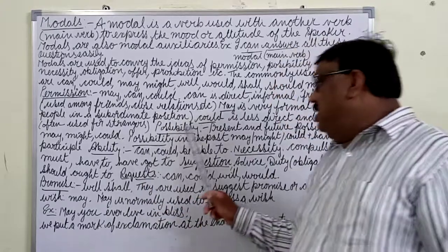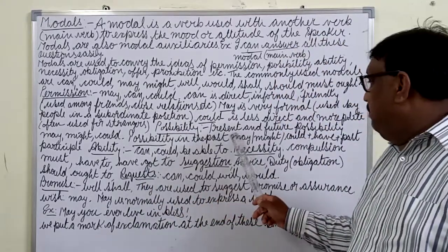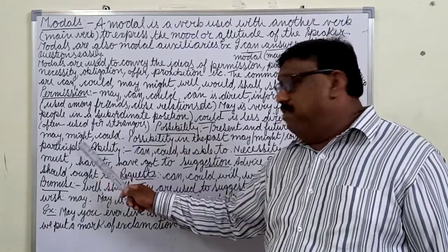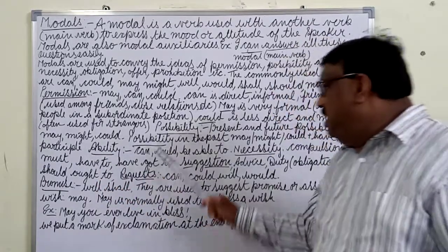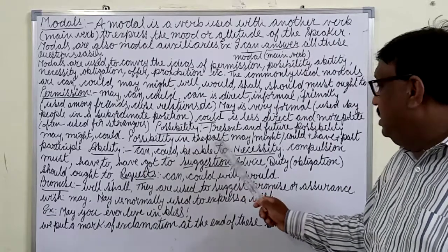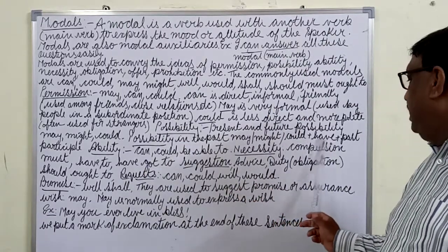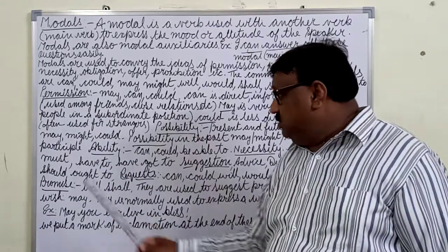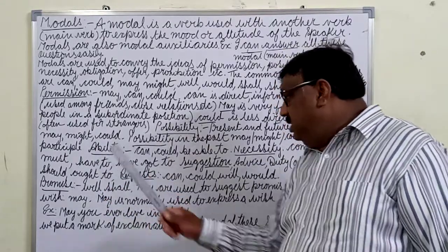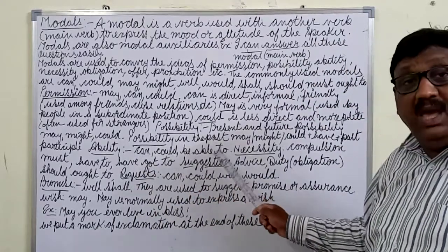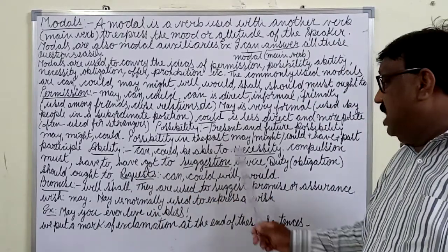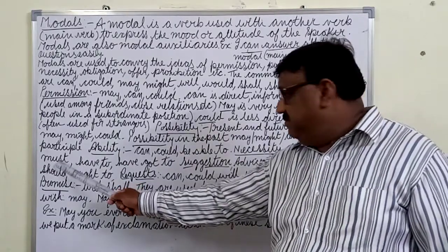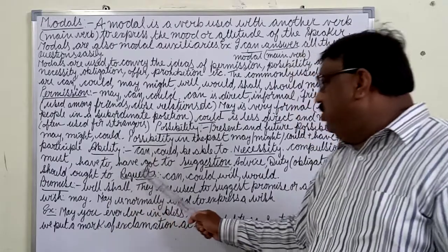For present and future possibility, we use May, Might, and Could. For possibility in the past, we use Might or Could plus have plus past participle. For ability or inability, we use Can, Could, or Be Able To. For necessity or compulsion, we use Must, Have To, or Have Got To.